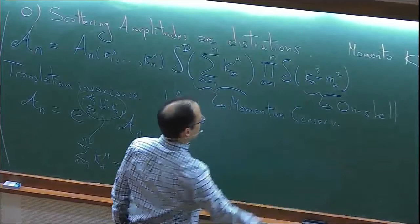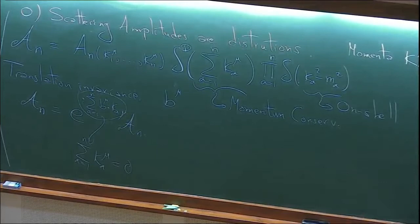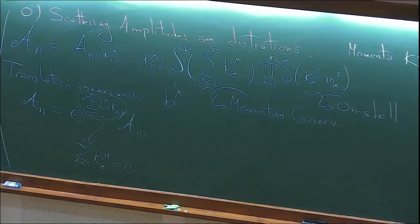Since I already put in one delta function, it doesn't hurt to put in more. So I'm going to define my amplitudes as requiring particles to be on-shell. This is the on-shell condition together with momentum conservation. The first class of theories we're going to consider are the simplest possible ones.